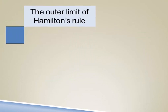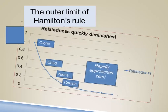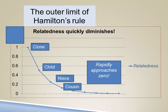Now in the case of Hamilton's rule, we said that there was an outer limit, and this is conceptualized quite easily. If we look at the inheritance systems of mammals like humans, then relatedness falls off at the level of 50% with each step out. So that a niece is half as closely related to us as a child, and a first cousin is half as closely related as a niece. And because of that, we suggested that there was probably a size limit to Hamilton's rule.